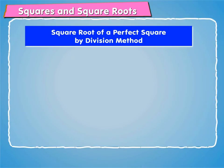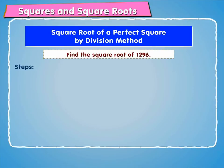Let us now learn about the square root of a perfect square by division method. Let us find the square root of 1296 by division method. For that, we follow these steps.